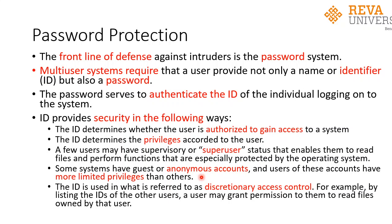The ID is used in what is referred to as discretionary access control. Based on the ID, access control is allocated. Users with ID 1 may be given access control to a lower extent, user ID 2 to a moderate extent, and user ID 3 to a higher extent. So the ID determines the access control of the users.